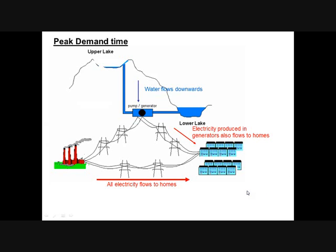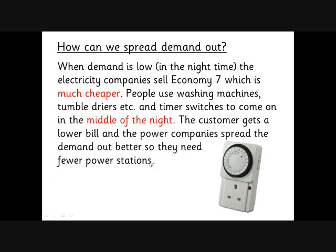Pump storage doesn't solve the whole problem, so the other approach is trying to spread demand out — reducing demand during the daytime. One way is to think about appliances you don't really have to use during the day, like washing machines and tumble dryers, which you can put on overnight. Electricity companies encourage this by selling something called Economy Seven electricity, which is much cheaper than normal — you might pay 10 to 12 pence a unit normally, but only 3 or 4 pence a unit on Economy Seven. You put your tumble dryer on a timer to switch on at two in the morning: you pay less for electricity, and the power company is happier because they don't need to build as many power stations, getting closer to that nice flat line of constant electricity use throughout the day.